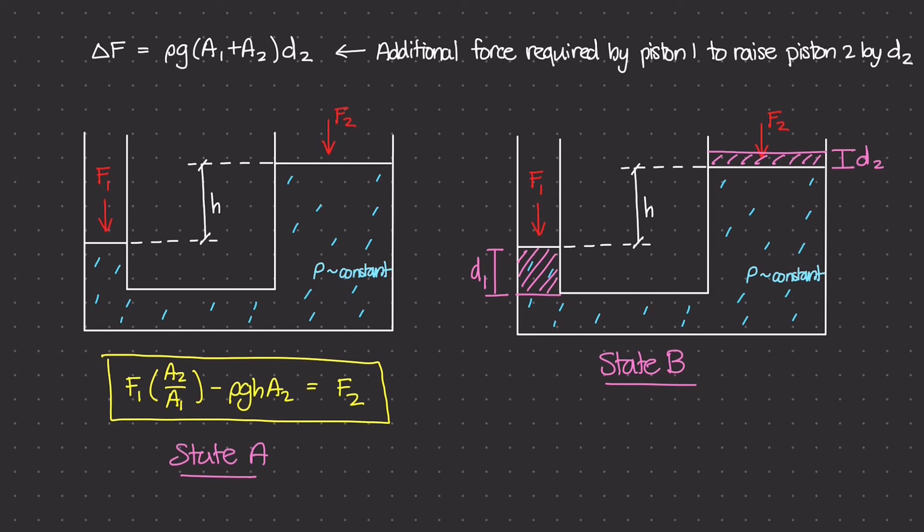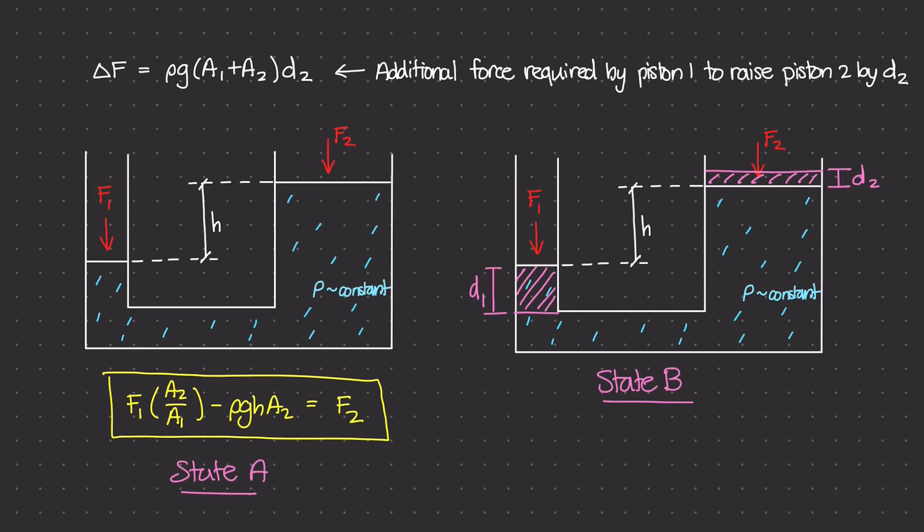The area is pi r squared, the volume that piston 1 has to push down, so I'm going to call that V1. So this volume, which is all of this volume right here, that's volume 1, this is going to be equal to A1, which is the area of the piston, times D1, right? Area times distance gives us volume.